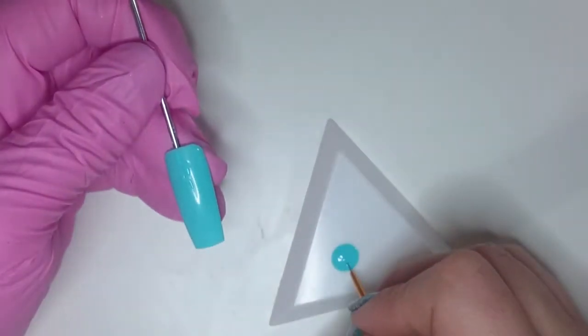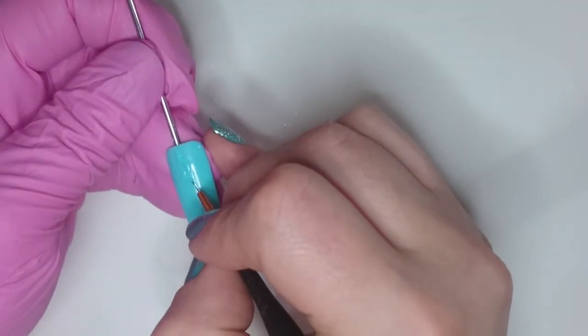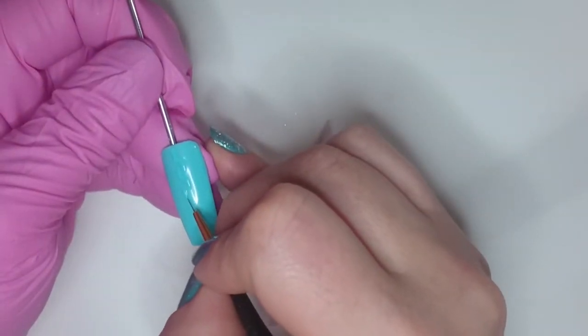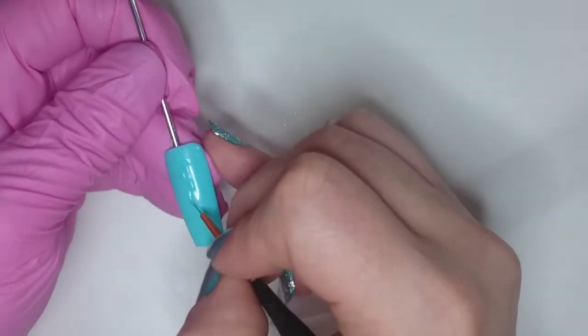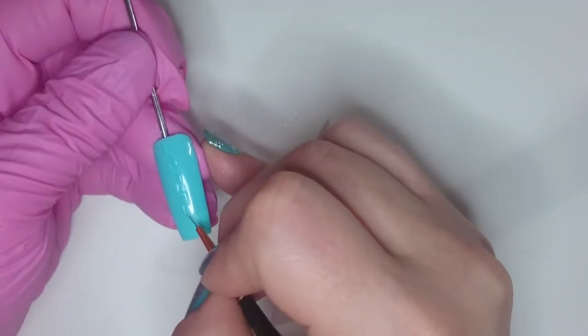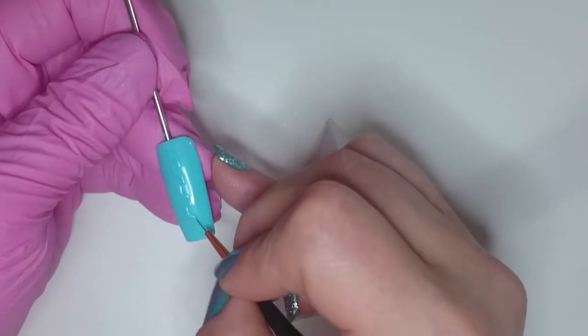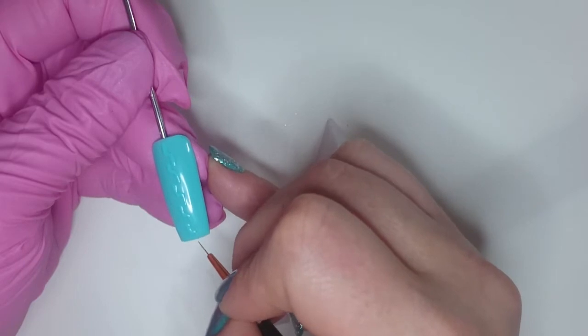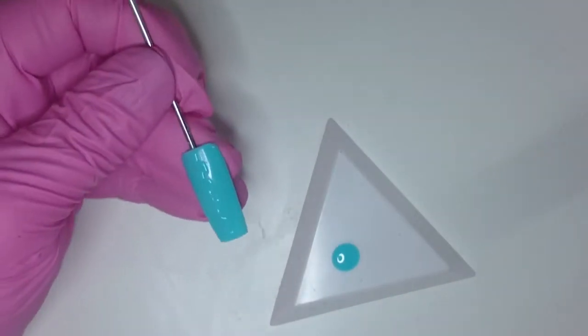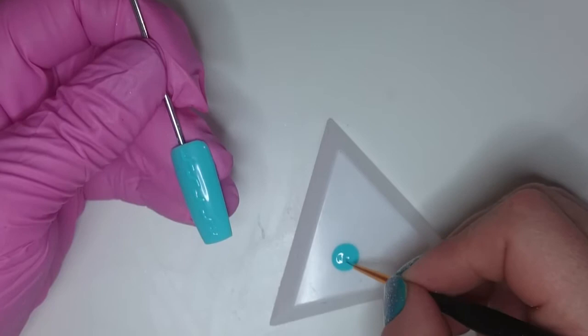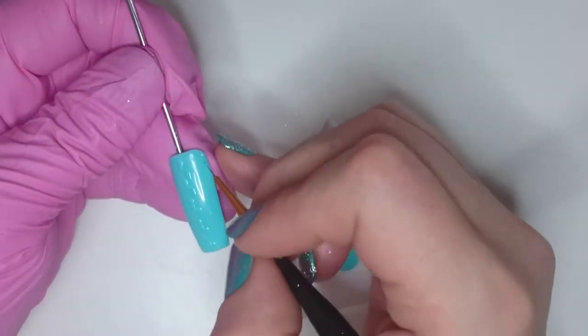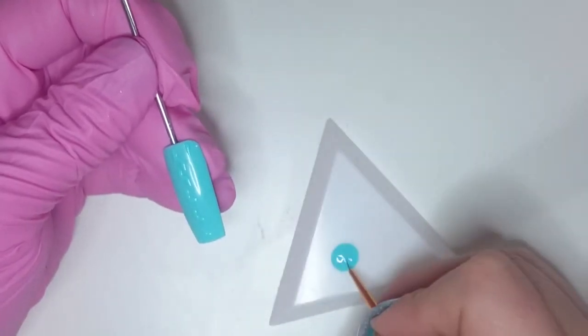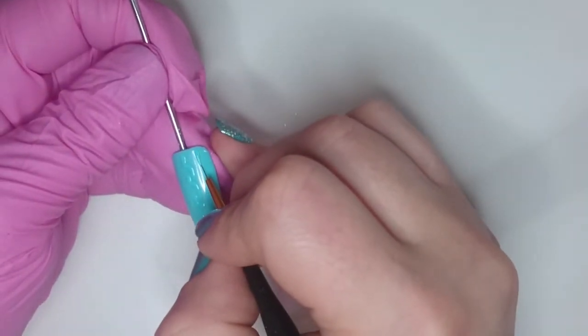And just angle it so you can see what the hell you're doing. So there's a couple ways that you can do this, the way that I'm going to show you today the whole way down the nail is using acrylic powder.